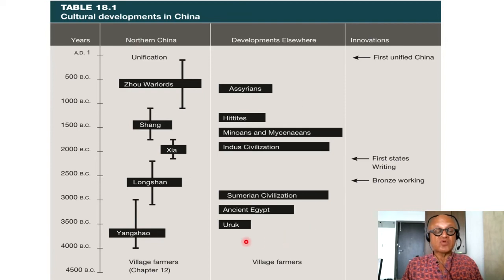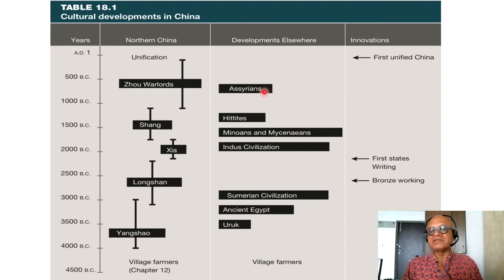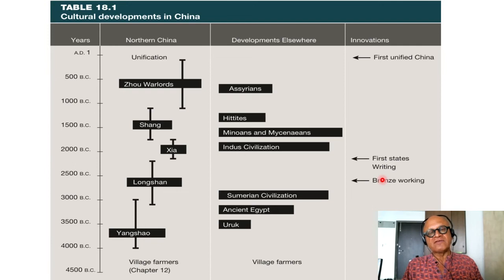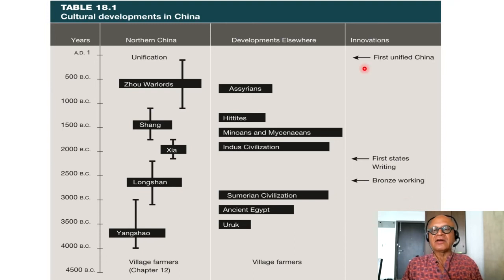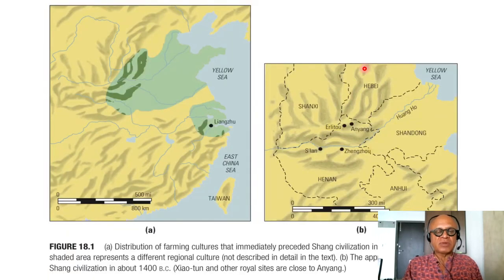Developments elsewhere around the same time: we had Uruk around 3600 BC, ancient Egypt, the Sumerian civilization we touched on, the Minoans and Mycenaeans we will look at a little more in the next chapter, Hittites and Assyrians. We also had bronze working, first states, writing, and first unified China happening around these times. Writings included symbolic languages, paintings of animals, and then actual writing in terms of letters and symbols interpreted by linguists along the way.